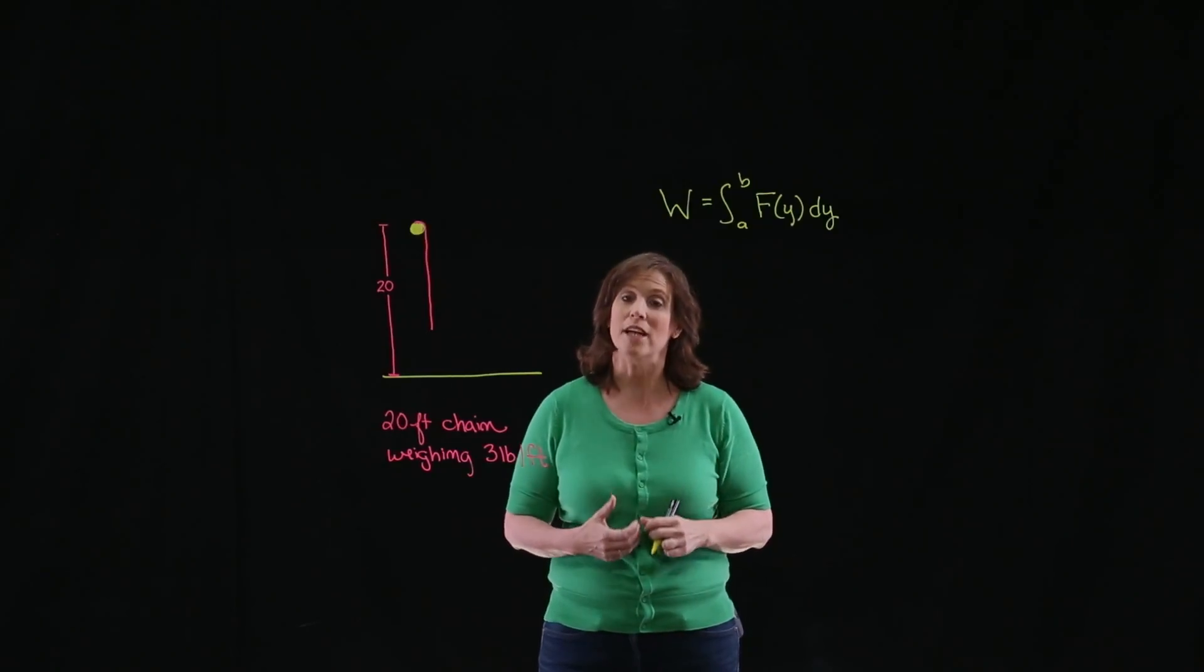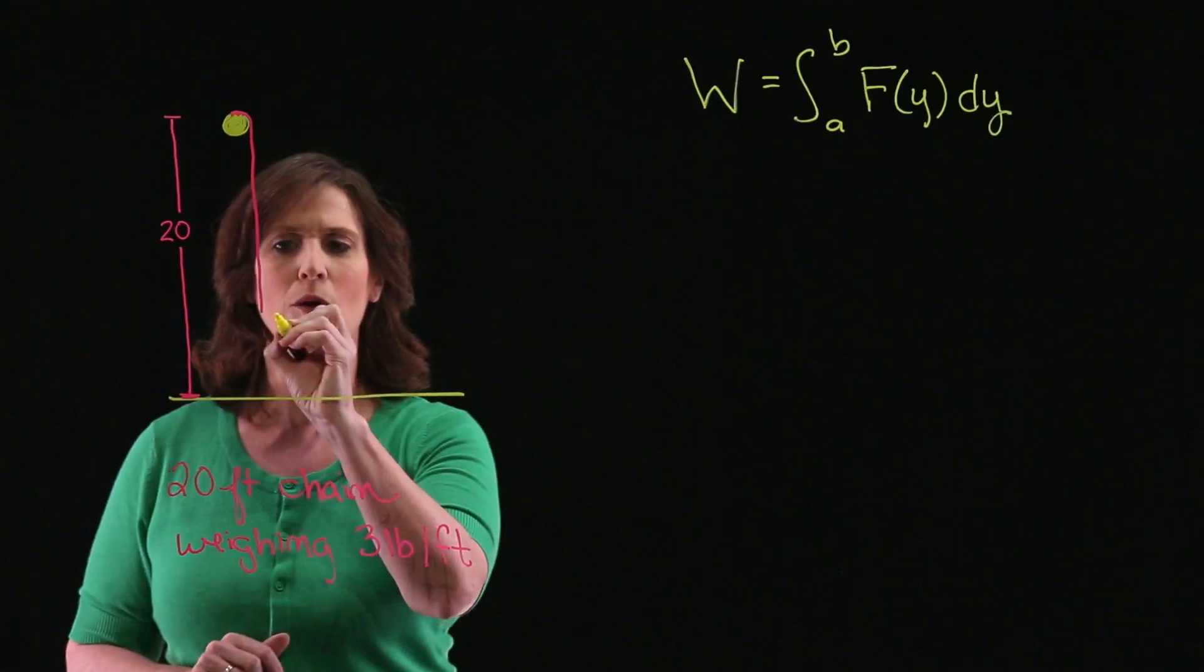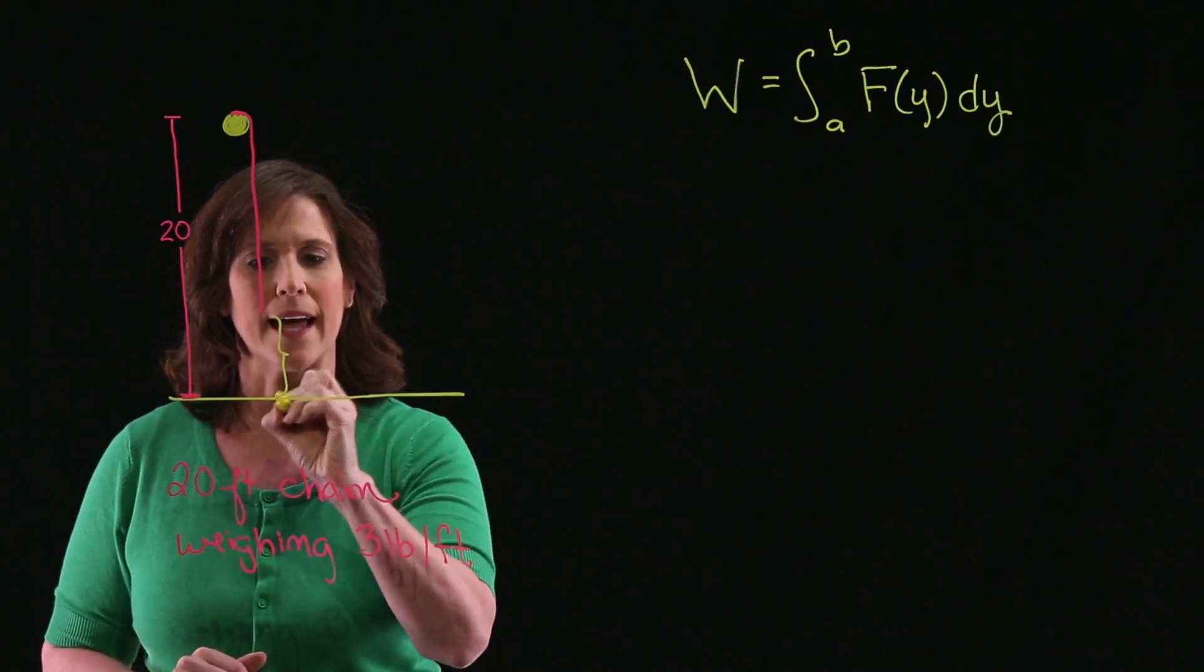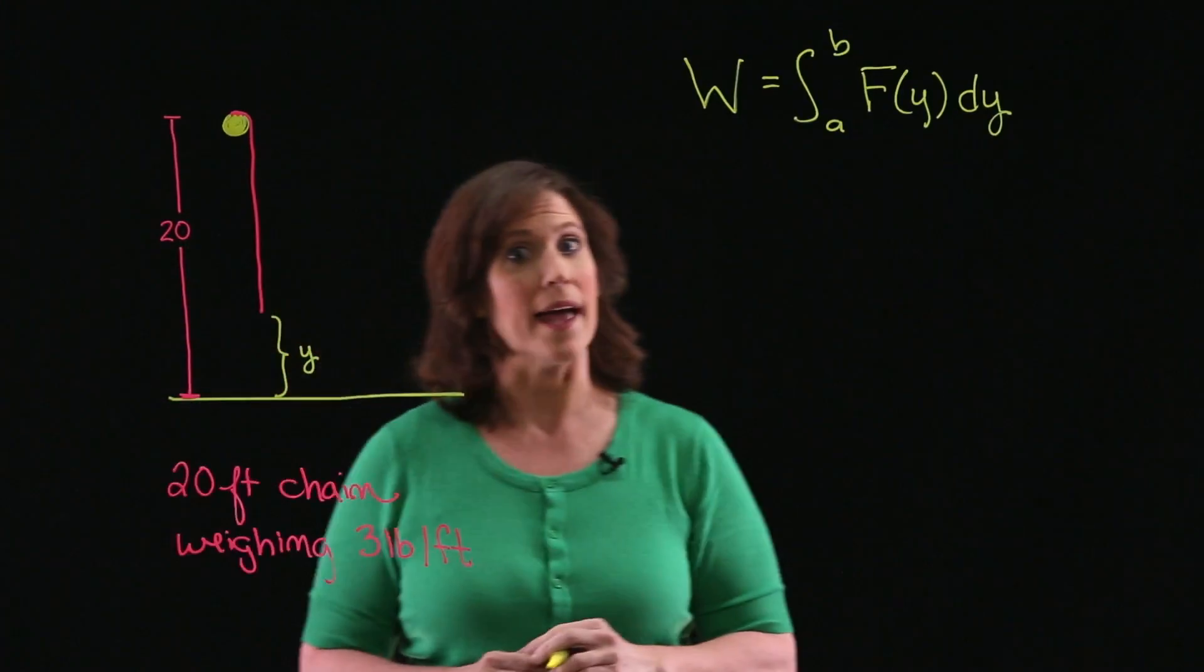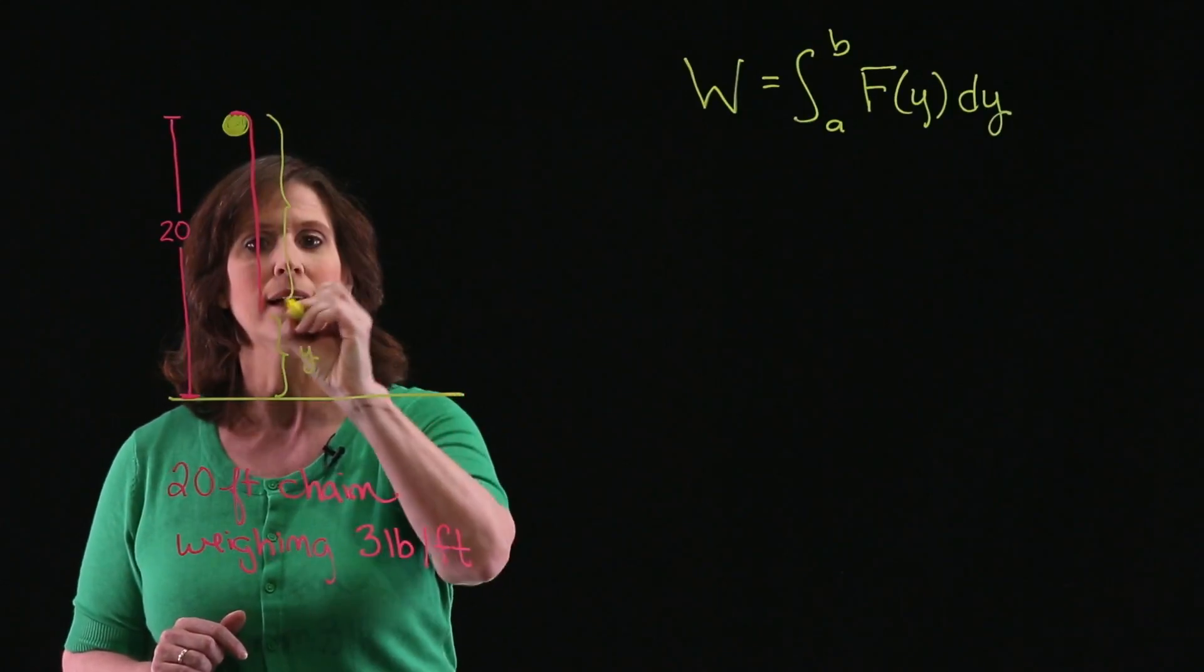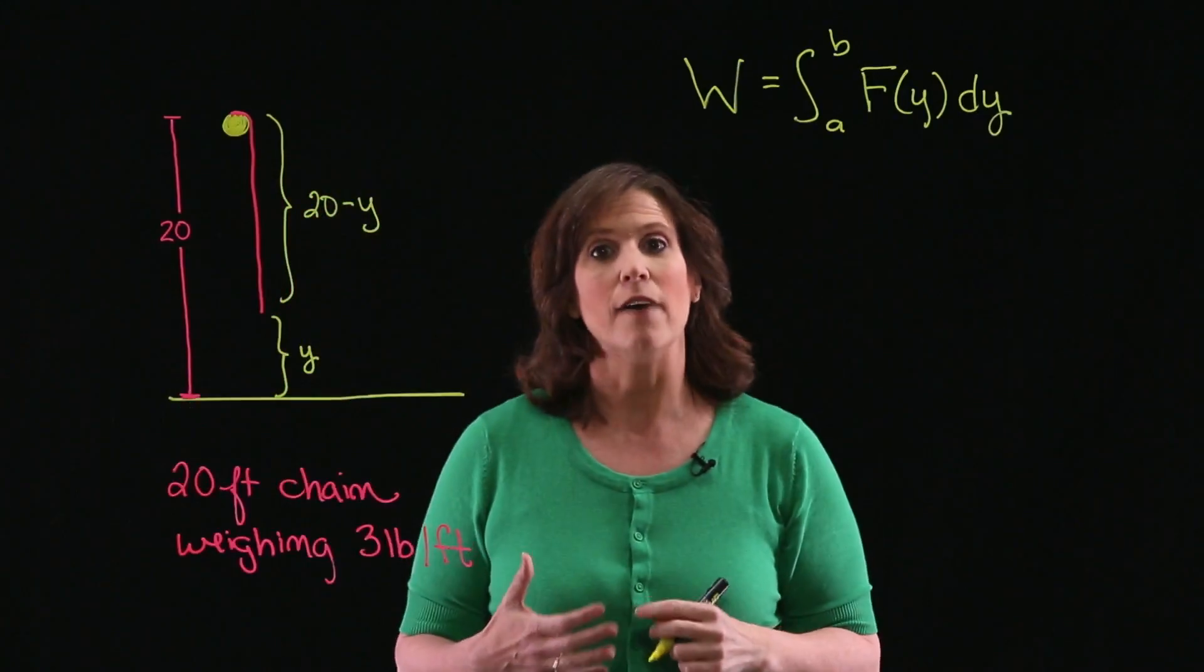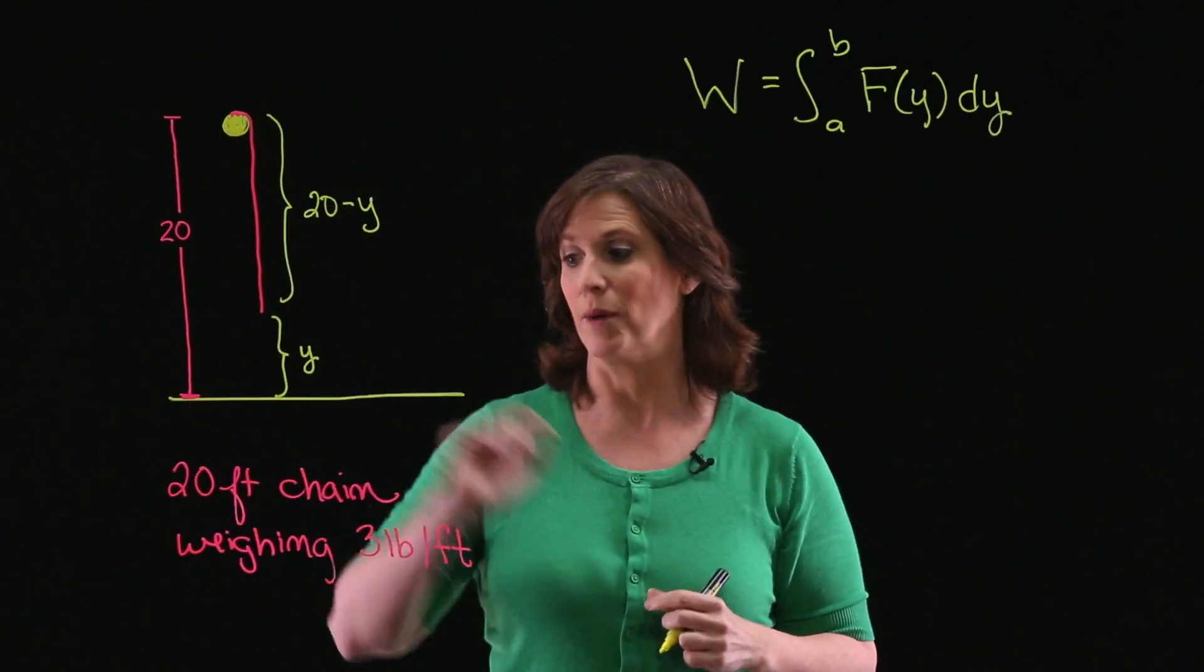Okay, now I need to come up with an equation for this force. Well, let's go ahead and look at our picture. We're going to say that this length is y, which means that there will be 20 minus y feet of chain out at any moment.